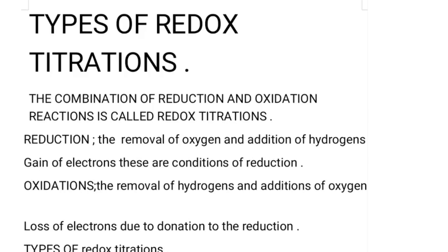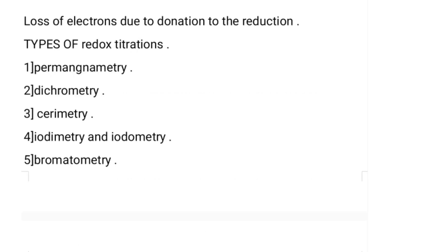Now, oxidation is against to the reduction. The conditions of oxidation are: removal of hydrogens, addition of oxygens, and loss of electrons — because it is donating its electrons to the reduction. That is why it is losing the electrons.